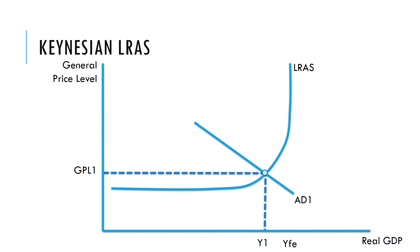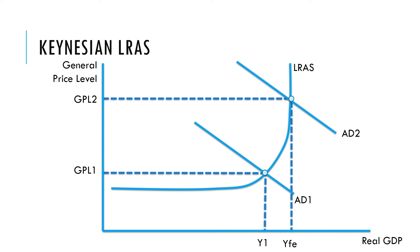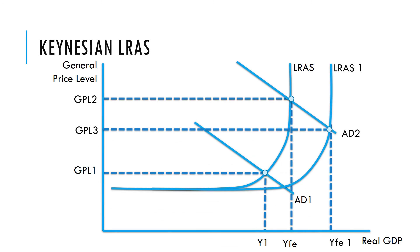With the Keynesian long-run aggregate supply curve, an increase in aggregate demand leads to both a higher price level and a higher level of output. If the maximum the economy can produce increases — say from YFE to YFE1 — this shifts the aggregate supply curve to the right and moves the economy to a new equilibrium at price level 3.